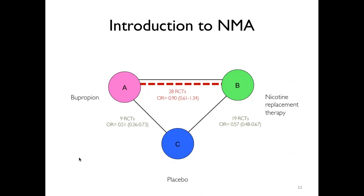Let's say that we also have a direct comparison between these two interventions — a head-to-head comparison with one RCT. We can then get a network meta-analysis estimate by combining the direct and indirect evidence. The combination of these two estimates may enhance precision in the NMA estimate by increasing sample size and thus narrowing confidence or credible intervals.